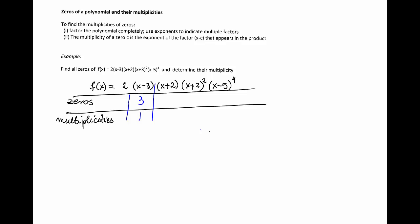The next factor is x plus 2, so the zero is negative 2, and this factor appears just once, so the multiplicity is 1.